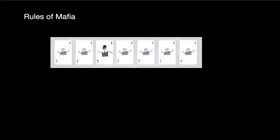At the beginning of the game, every player is assigned a role. Most players are assigned the role of townsperson, but then one to two players are assigned the role of the Mafia. The main goal of the townspeople is to uncover which player is the Mafia and eliminate them from the game. On the other hand, the Mafia tries to avoid suspicion and eliminate all of the townspeople.